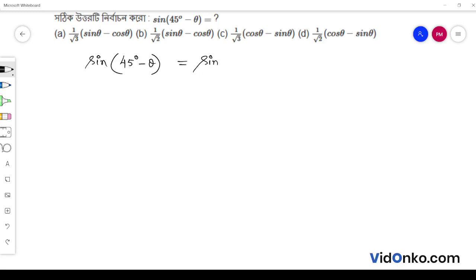It is equal to, using the sine difference formula: sin 45° cos θ minus cos 45° sin θ.